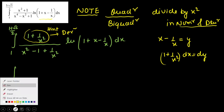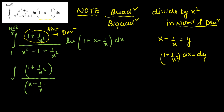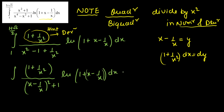Now I'll convert everything in terms of x - 1/x. We keep (1 + 1/x²) in the numerator as is. In the denominator, x² - 1 + 1/x² can be written as (x - 1/x)² + (-2 + 1) = (x - 1/x)² - 1. And ln of (1 + x - 1/x) remains. Substituting y = x - 1/x, we get the integral of ln(1 + y) / (1 + y²) dy... wait — the denominator becomes y² - 1... Actually after substitution we get ln(1 + y) / (1 + y²) dy.